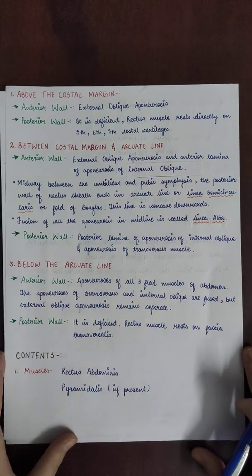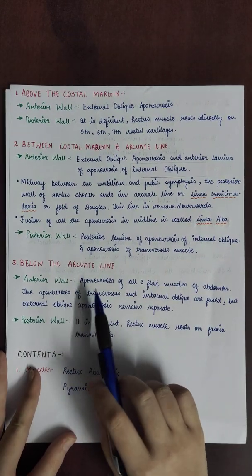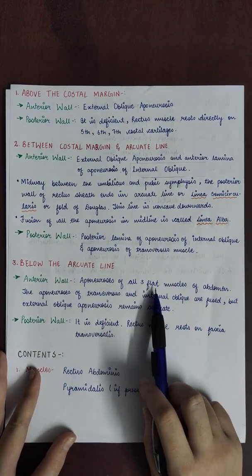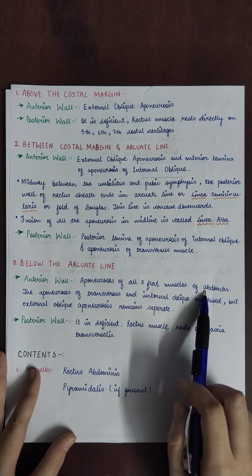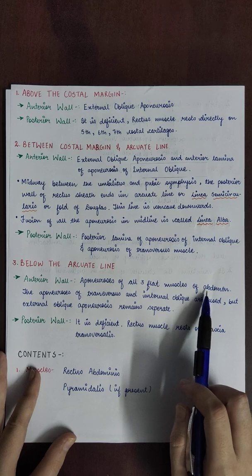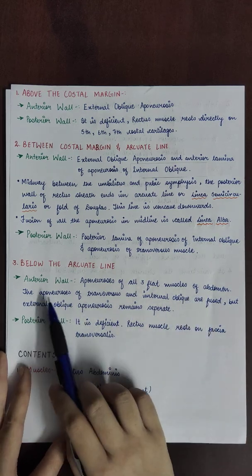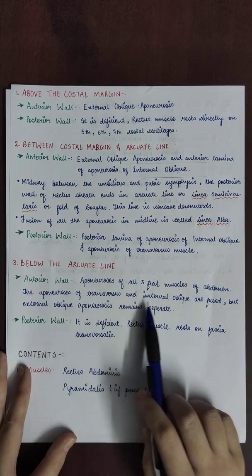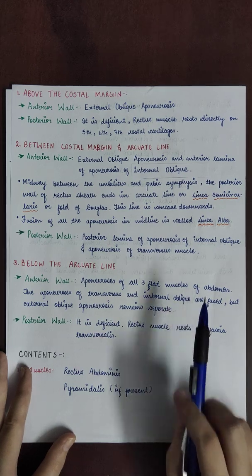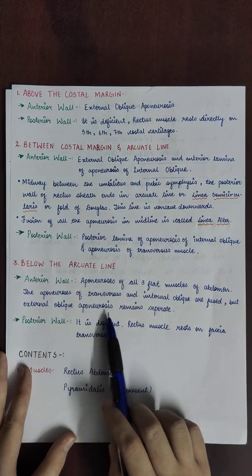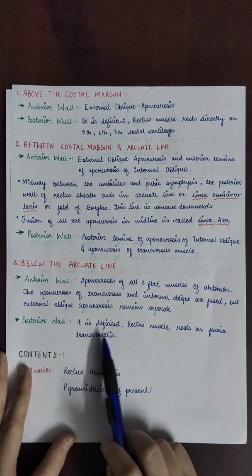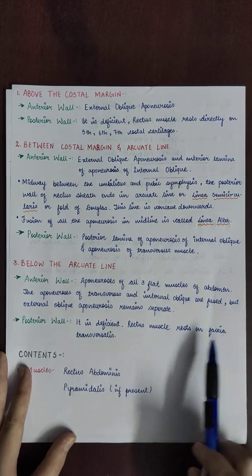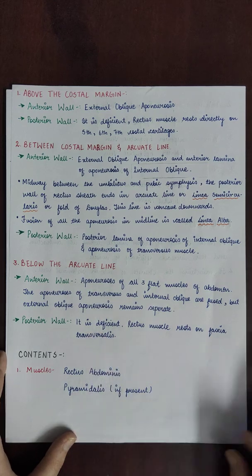Below the arcuate line, the anterior wall is formed by the aponeurosis of all three flat muscles of the abdomen — internal oblique, external oblique, and transversus abdominis. The aponeuroses of transversus abdominis and internal oblique are fused, but external oblique aponeurosis remains separate. The posterior wall is deficient, and the rectus muscle rests on the fascia transversalis.